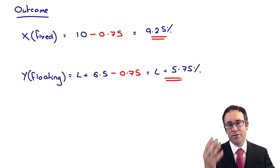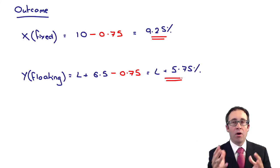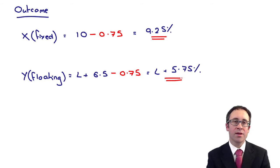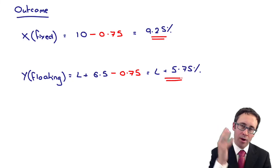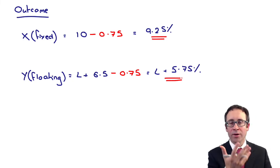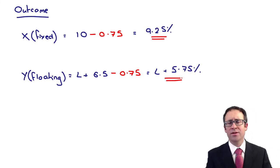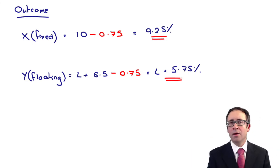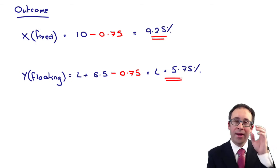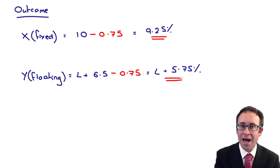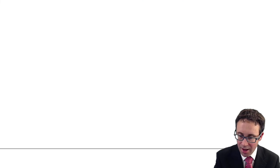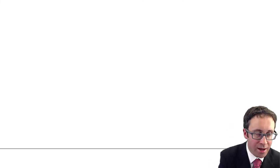If X went to the bank and borrowed its fixed rate of 10%, it can now borrow variable, swap the interest payments, and get its fixed rate cheaper than it would if it did everything by itself. Similarly with Y — Y wants floating, but to make the swap work it's borrowed fixed. Then as we'll show in a moment, we get what we desire at a cheaper rate. If Y just went to the bank and said 'I want a floating rate', it would cost them LIBOR plus 6.5%. But by borrowing fixed and swapping the interest payments — so X pays Y's interest and Y pays X's interest — they end up with a cheaper rate.